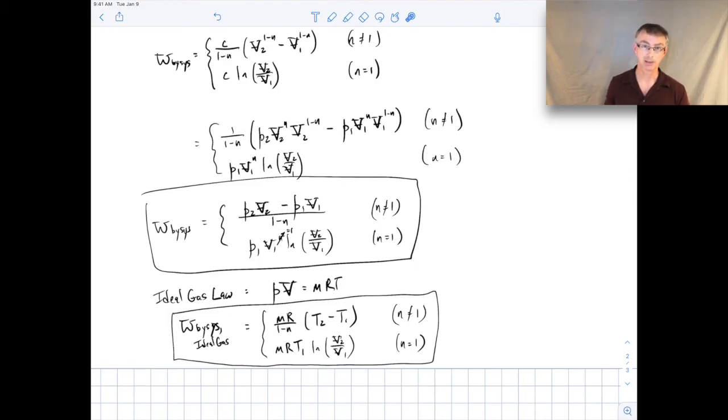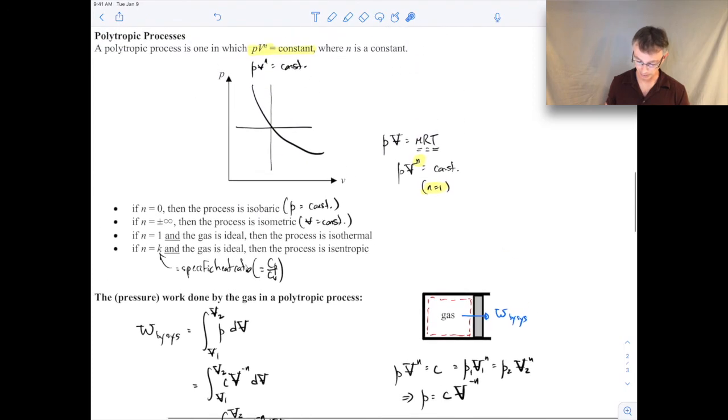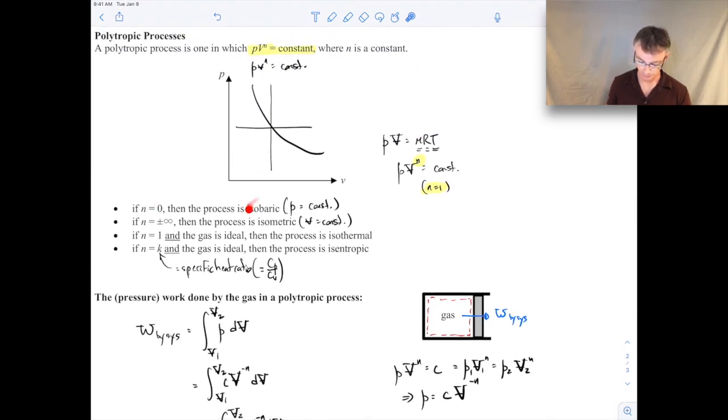We talk about polytropic processes because many of the processes we deal with look like polytropic processes. Like I mentioned at the very beginning here where if N is equal to zero, it's isobaric. If it's infinite, then it's isometric, meaning just specific volumes of constant. And since we deal a lot with ideal gases, often we'll deal with isothermal processes and ones that are isentropic, which we'll talk about later. So these polytropic processes do show up pretty often.